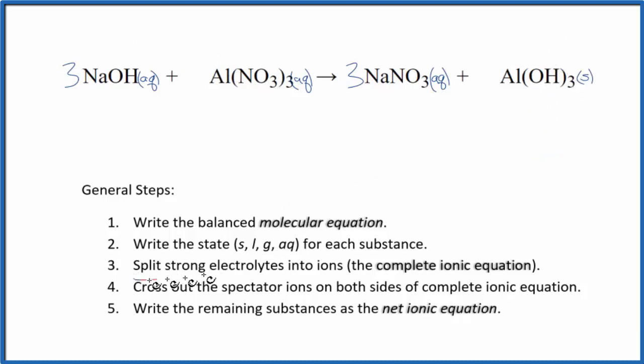Once we have the states, we can split the strong electrolytes into ions. And that'll give us the complete ionic equation. Sodium's in group one on the periodic table. That'll have a one plus ionic charge. And the whole hydroxide ion is one minus. So we have three sodium ions. And I won't write the states right now. Let's do that at the end. Plus the three goes to everything. So we have three hydroxide ions.